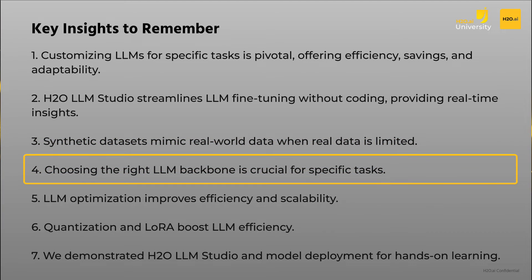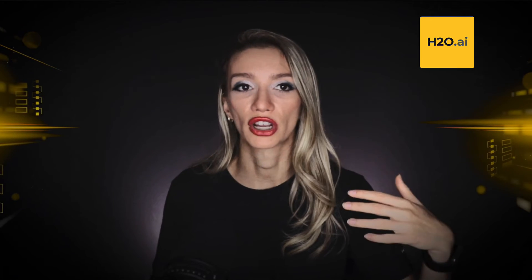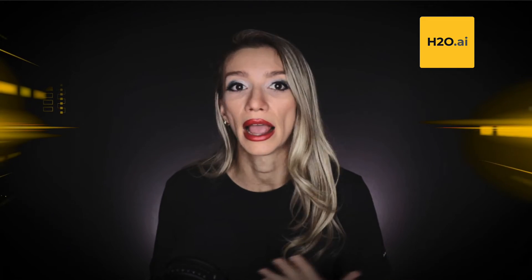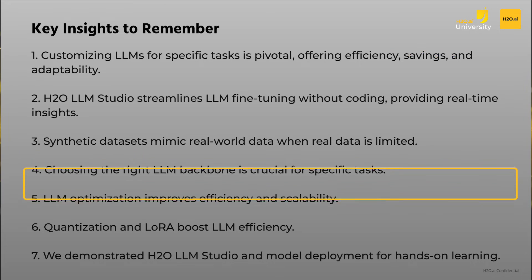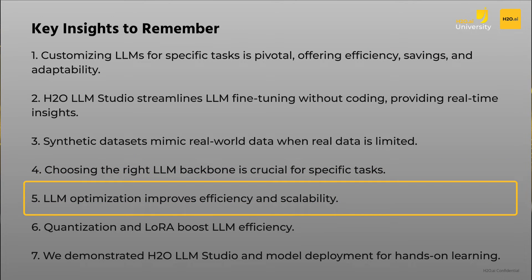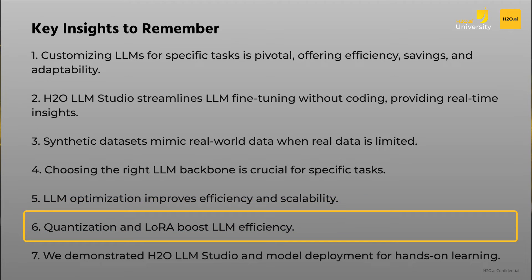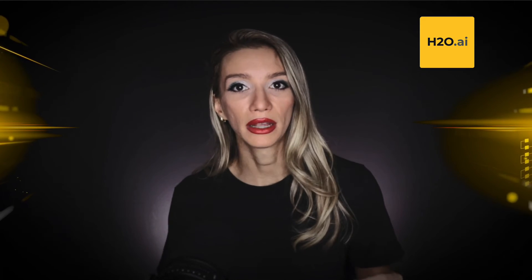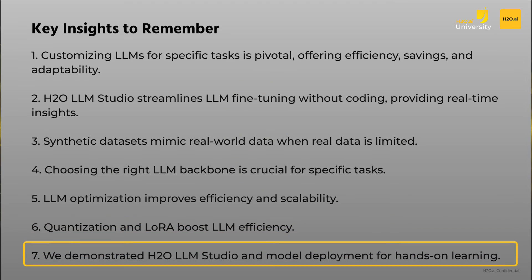Backbone selection: we've discussed the importance of choosing appropriate LLM model backbones for specific tasks, considering factors such as model size, data availability, and domain specialization. LLM optimization: we've highlighted LLM optimization as a critical step for improving model efficiency, cost-effectiveness, safety, and scalability. Quantization and LoRa: we've introduced optimization techniques like quantization and low-rank adaptation, LoRa, to enhance LLM efficiency and resource utilization.